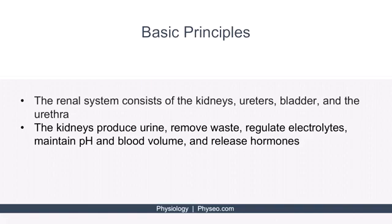The renal system consists of the kidneys, the ureters, the bladder, and the urethra. However, throughout this chapter, we will primarily be focusing on the physiology of the kidneys.